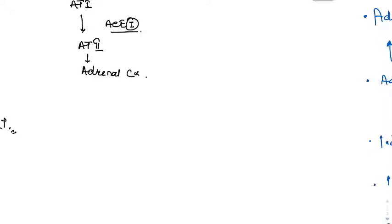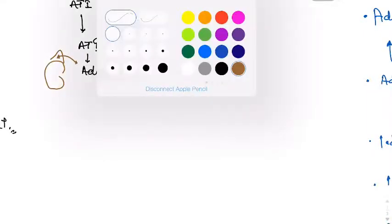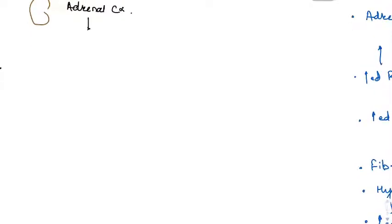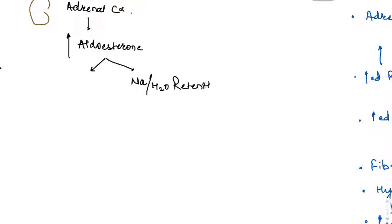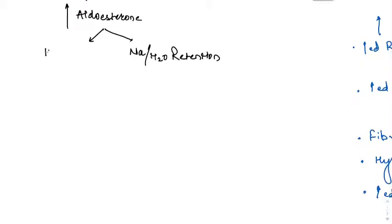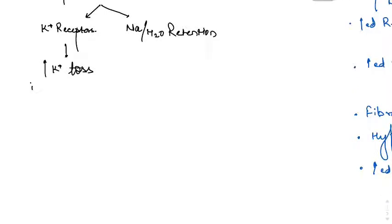To understand hyperkalemia: angiotensin 2 normally acts on the adrenal cortex to stimulate mineralocorticoid (aldosterone) secretion. Aldosterone causes sodium and water retention and promotes potassium excretion via sodium-potassium antiport receptors. This normally results in hypokalemia.